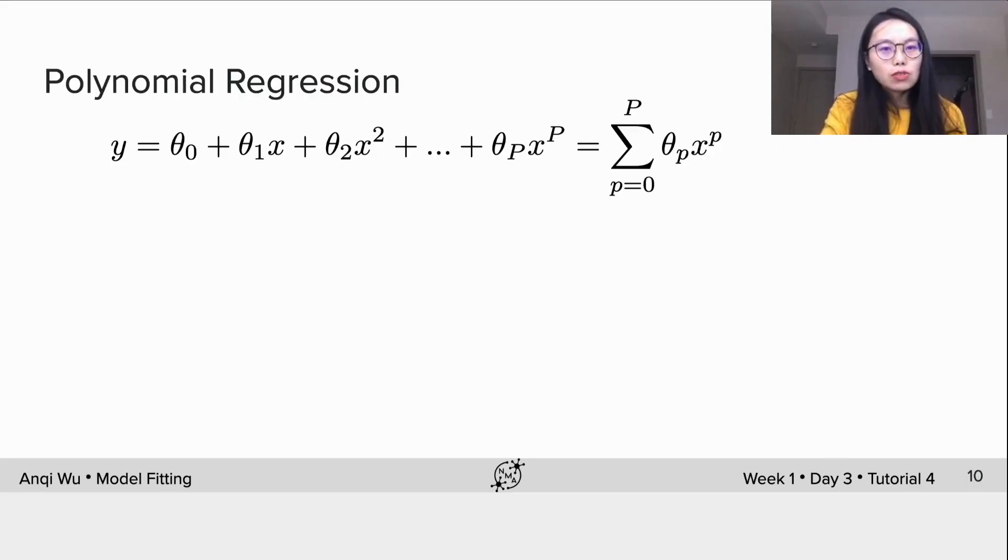One more thing I want to introduce under this multilinear regression topic is polynomial regression. The expression is defined here. Previously, each input variable is a different stimulus feature like contrast or orientation, but here the input is the same feature x but with different powers. We introduce this model here because we want to better characterize the link between stimulus and neural response which appears to be not completely linear in many cases.